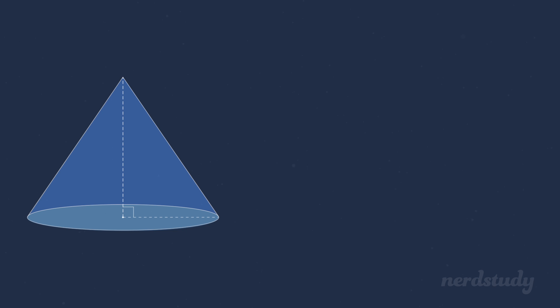The slant height, or this s, shall I say, is 7 centimeters. The radius, or the r over here, is 5 centimeters. Good. So if we plug in our values, we've got pi times 5 squared plus pi times 5 times 7.